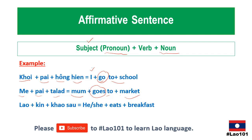Now, 'lao' in Lao means he or she — we don't have gender in Lao, we don't have a gendered pronoun either. For he or she we usually say 'lao'. For example, 'lao' means brother or sister, so as a general term we just say he or she as 'lao'. 'Lao gin khao sao' — he or she eats breakfast. 'Mae gin khao sao', 'koi gin khao sao' — this is the affirmative sentence structure.